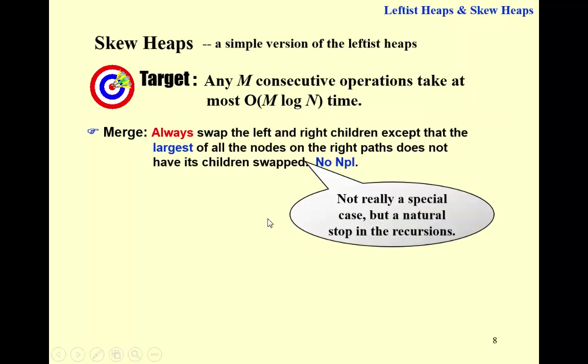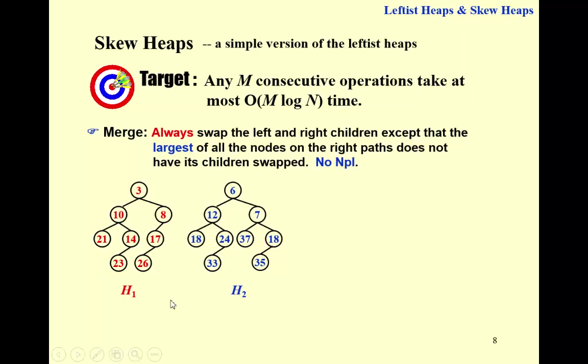As a matter of fact, this part, say the largest of all the nodes on the right path, doesn't have its children swapped. It's not really a special case, but a natural stop in the recursions. We're going to see what it means. Now let's take a look again at these two heaps.